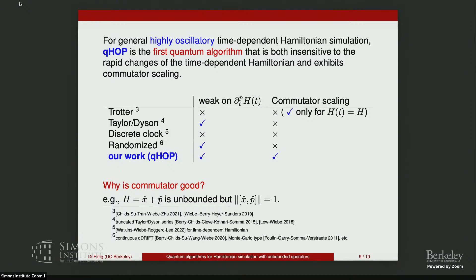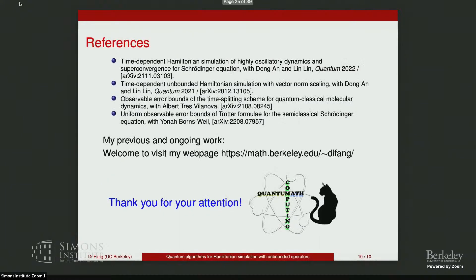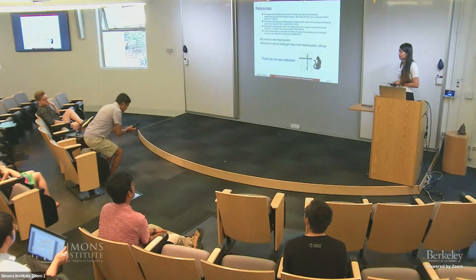This particular algorithm I talked about, QHop, addresses both sources of oscillation. The other source of oscillation comes from the fast variation in the Hamiltonian, so we also want the derivative dependence to be logarithmic. Our algorithm checks this box as well, so it is actually the first algorithm that can simultaneously handle these two problems — it is especially valuable when we have an unbounded operator. That is pretty much my talk. There is also another result regarding observable error bounds, which is a framework of analysis that can give you further improvements for Hamiltonians with unbounded operators in the setting of molecular dynamics. Thank you for your attention — if you are interested, feel free to discuss or check my webpage. Thank you.